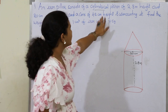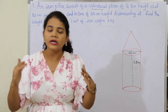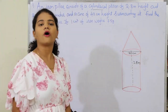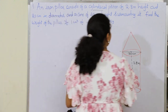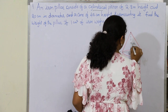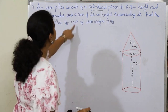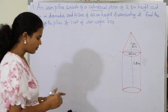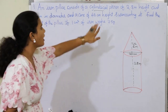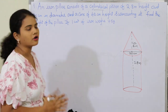And a cone of 42 centimeters height is surmounting on the cylinder. So the height of the cone is 42 centimeters. The question is: if 1 centimeter cube of iron weighs 7.5 grams, then what is the weight of the pillar?